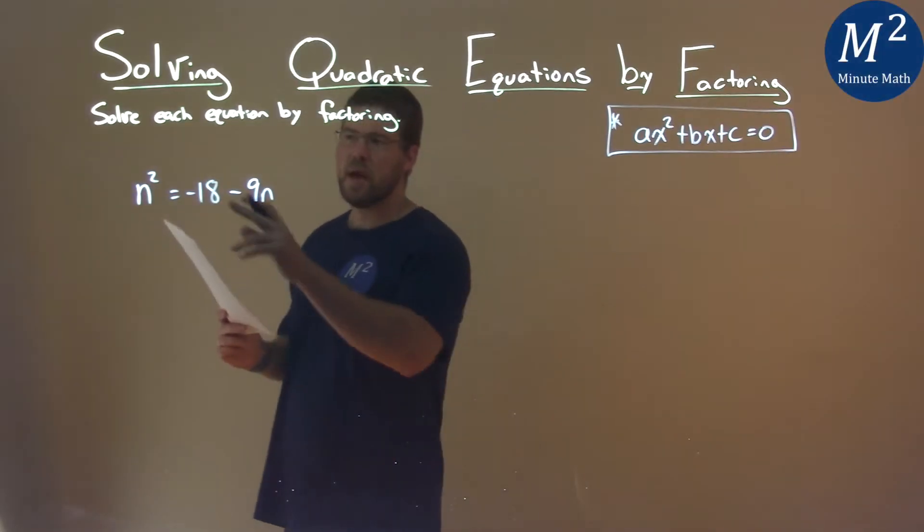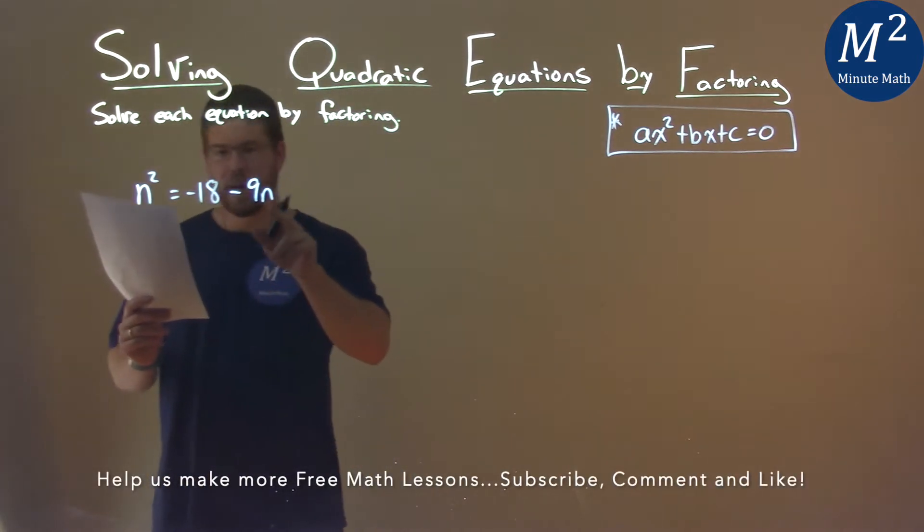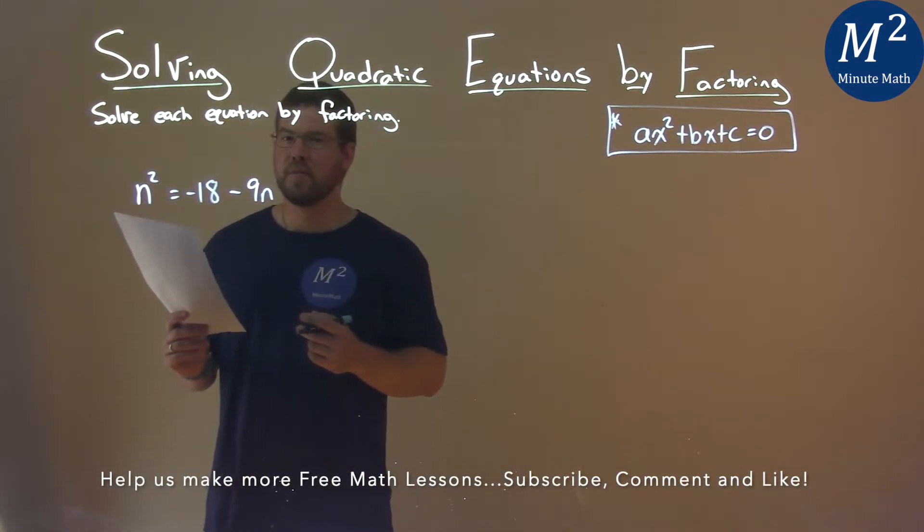We're given this problem right here. n squared equals negative 18 minus 9n and we need to solve this by factoring.